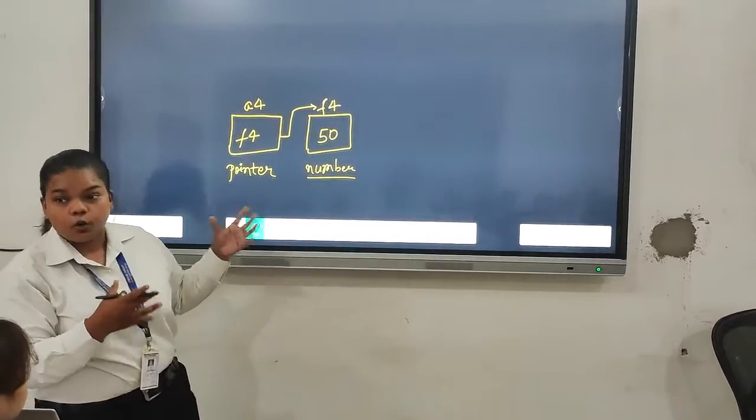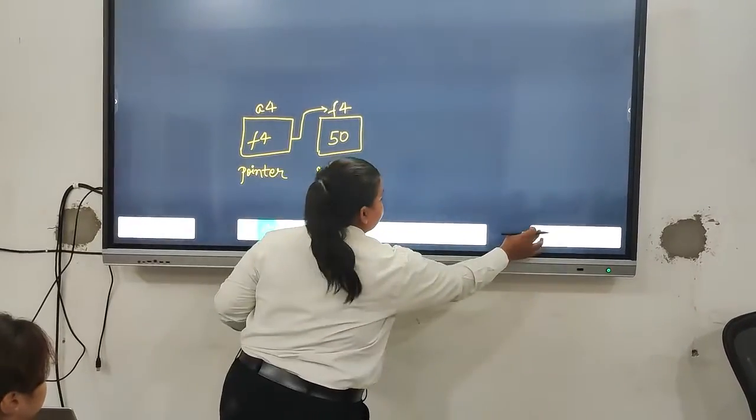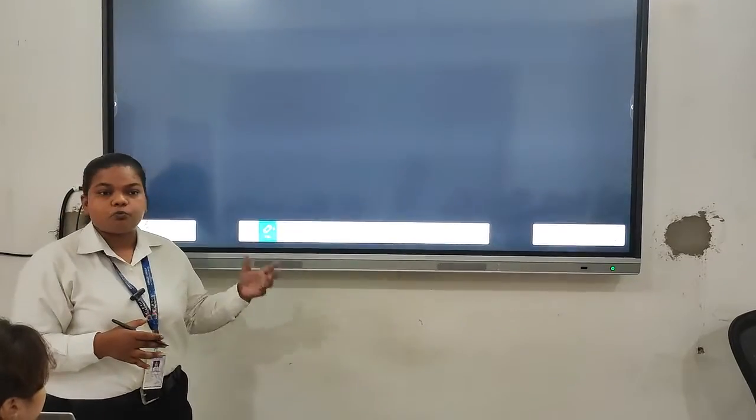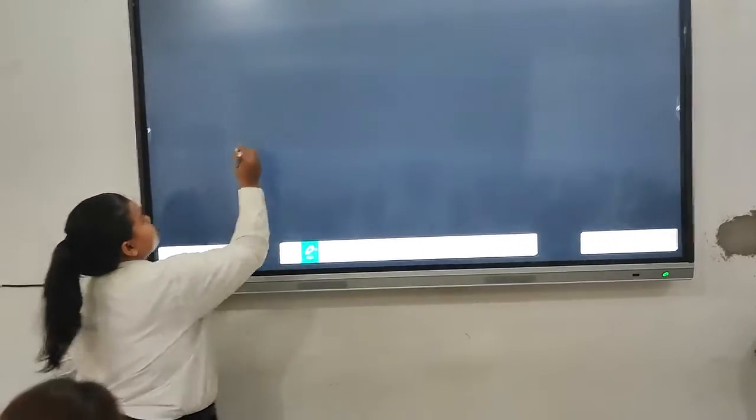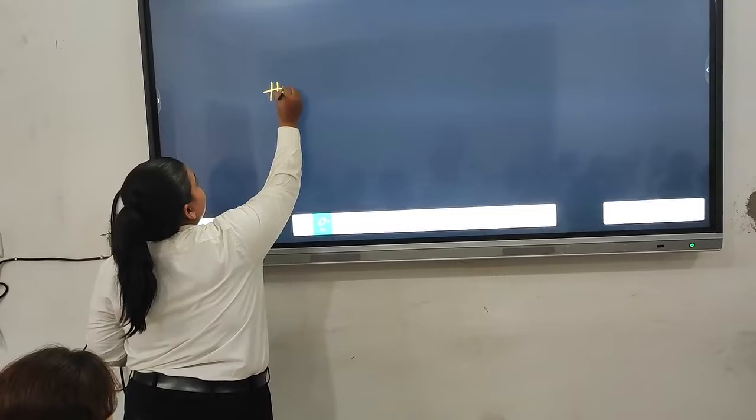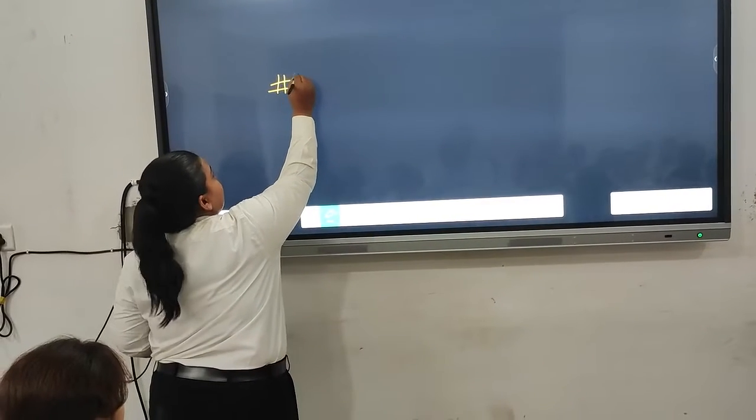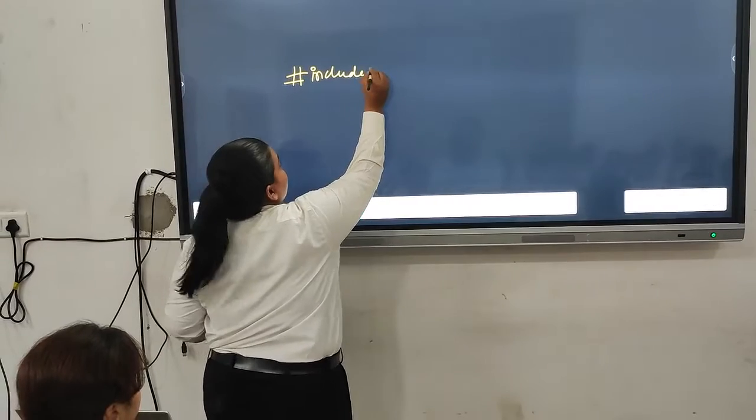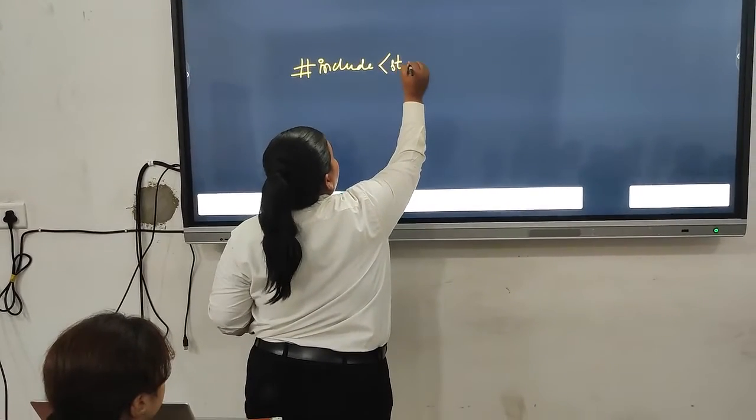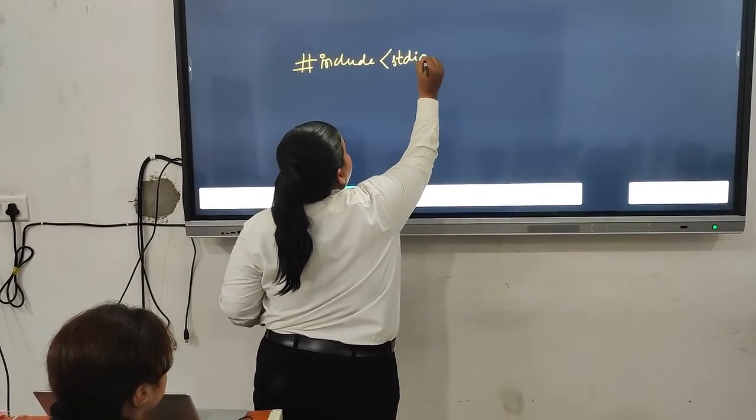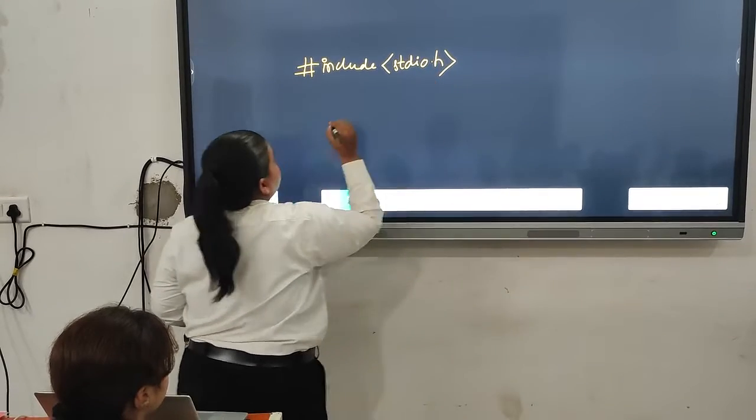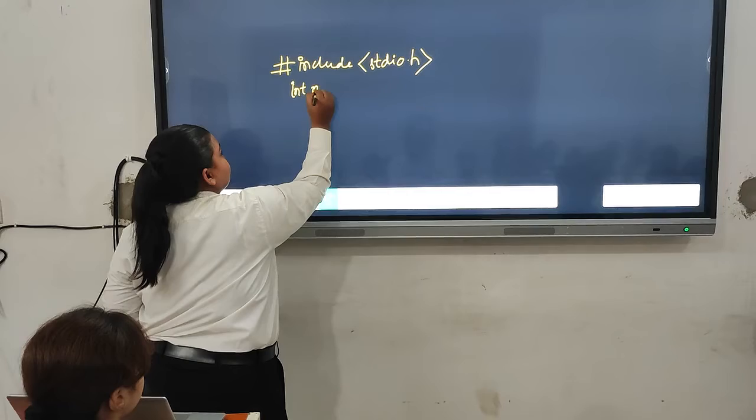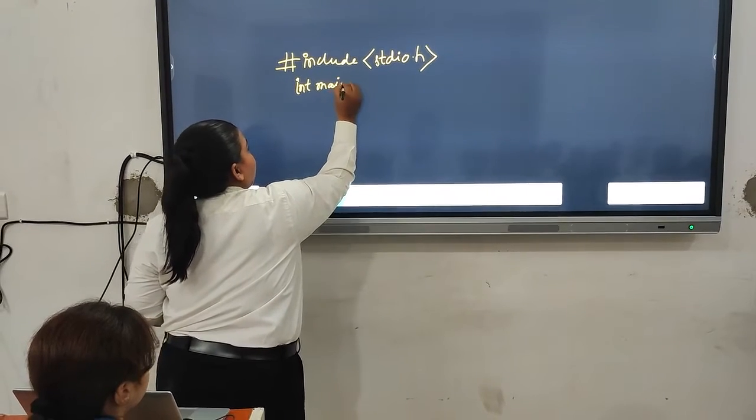Now we will see it with code. How do we use it? So for printing the address and value using pointer, here is the code. First we will write the basics of C programming language. That is hash include stdio dot h. Now we will write int main parenthesis parenthesis.